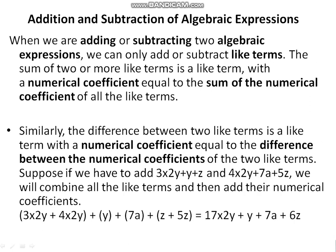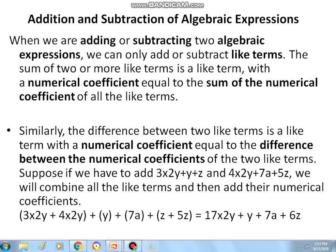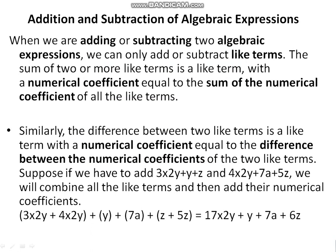Next is addition and subtraction of algebraic expressions. We can only add or subtract like terms. The sum of two or more like terms is a like term with a numerical coefficient equal to the sum of the numerical coefficients of all the like terms. The sum of unlike terms is not possible. Similarly, the difference of two like terms is a like term with a numerical coefficient equal to the difference of the numerical coefficients of the two like terms.